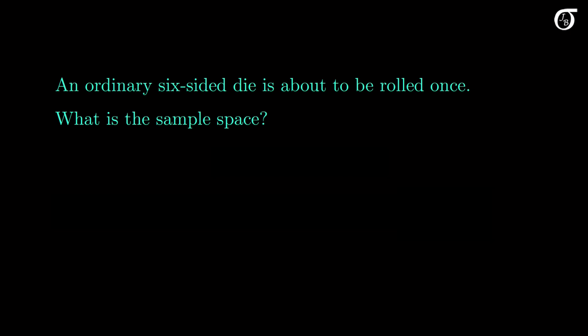Let's start with a simple example. An ordinary six-sided die is about to be rolled once, and we intend to observe the number on the top face. What is the sample space? We often have a choice of precisely how to define the sample space, and our options depend on the probability problem at hand, but in this situation it's quite natural to have the sample space contain the six possible numbers that we can roll.